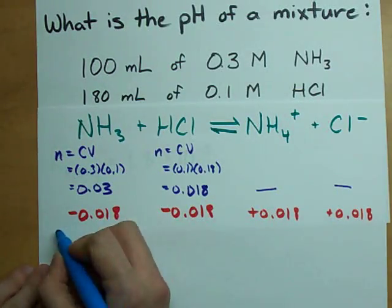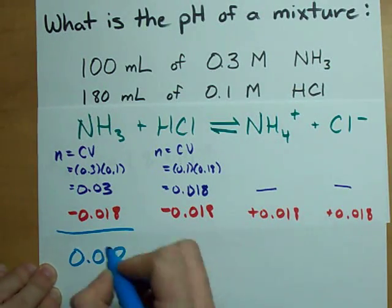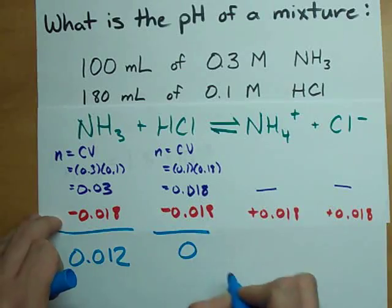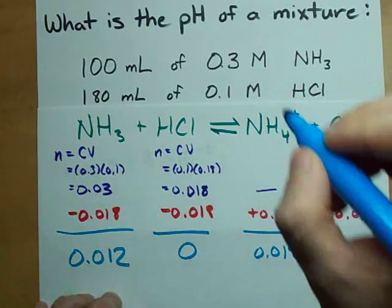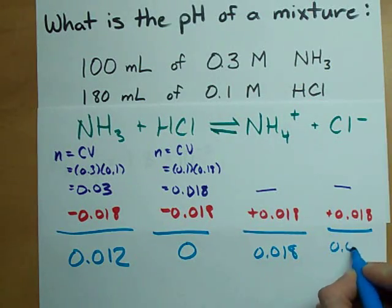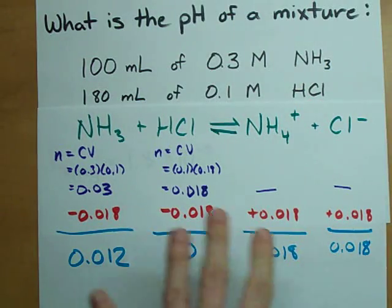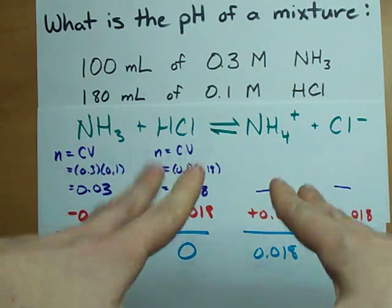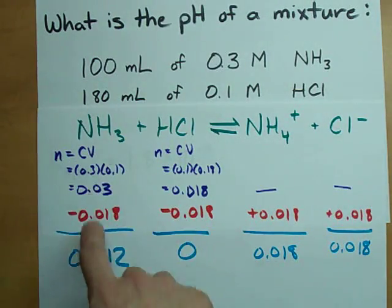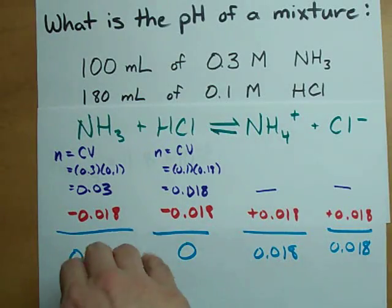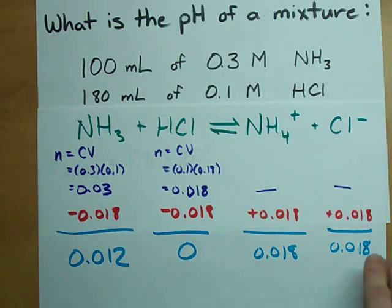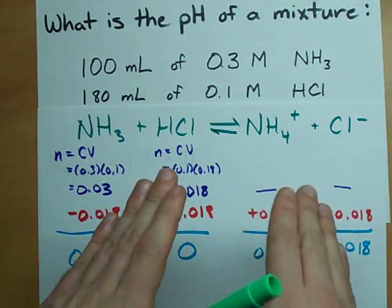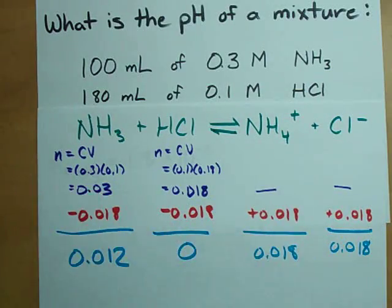Finally, how much do I end up with? I started with 0.03 moles of NH3, I lost 0.018, and I end up with 0.012 moles of ammonia. All of my HCl is gone. I end up with 0.018 moles of NH4+ and 0.018 moles of Cl-. This is always my personal first step for titrations: figure out how many moles I have in the starting solution, how much reacts away—one of these always disappears—and what I have in the resulting solution.